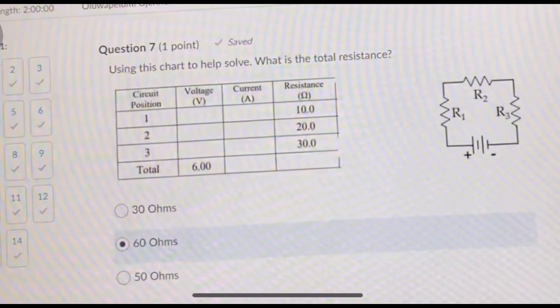Number seven, I'm going to do a little bit of math using this chart to help solve. What is the total resistance? You have R1, R2, and R3. You just add it all together: 10 plus 20 plus 30 equals 60 ohms. Easy.